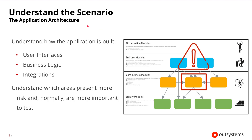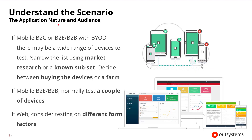To understand the overall scenario, it's also important to understand the nature of the application and its intended audience. If our application is a mobile business-to-consumer app or business-to-enterprise app with a bring-your-own-device policy, there can be a wide range of devices that we need to test. It would be helpful to narrow that list using market research or a known subset of devices. That can help us decide whether we need to buy those devices or rent and use a device farm. If the mobile app is an internal business-to-enterprise app, it may only be necessary to test on a couple of devices.